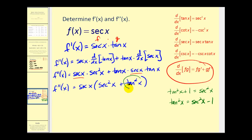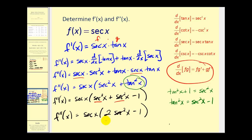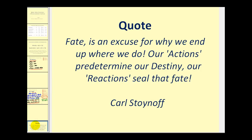Let's go ahead and do that — replace tangent squared x with secant squared x minus one. You'll notice we do have two common factors inside the parenthesis, so let's simplify one more time. We'd have two secant squared x minus one inside the parenthesis. So again, this video just provided a couple extra examples of higher order derivatives dealing with trigonometric functions. I hope you found the examples helpful.